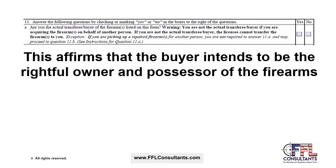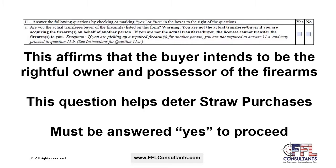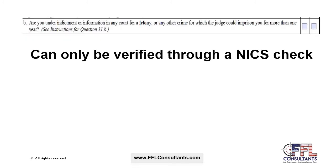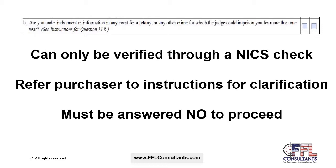The first question of Section 11 affirms that the buyer intends to be the rightful owner and possessor of the firearm. This question helps deter straw purchases and must be answered yes to proceed with a firearm transfer. Question 11B asks the purchaser if they are under indictment for a felony or subject to imprisonment by a judge for up to one year. This can only be verified through a NICS check — do not offer advice if asked, refer the purchaser to the instructions. This question must be answered no to proceed.